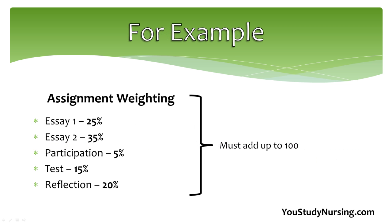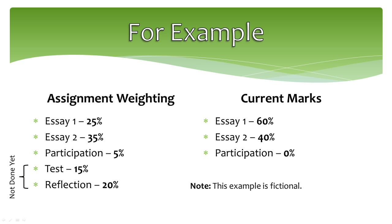If you look in your course outline, guidelines, or syllabus, you will find out how much of your final mark each assignment is worth. For this example, let's pretend a course mark is broken down into an essay worth 25%, another essay worth 35%, participation worth 5%, a test worth 15%, and a reflection worth 20%. Let's pretend that these are someone's marks in this class so far. Note that only 65% of the course has been completed.